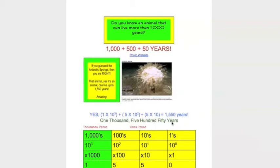1,550 years. If you look at that number in the place value chart, you can see there's 0 ones, 5 tens, 5 one-hundreds, and 1 one-thousand. The life of the Antarctic sponge is an amazing number.